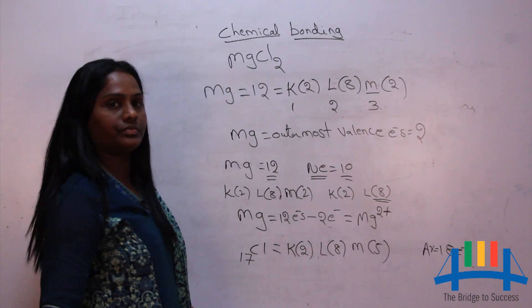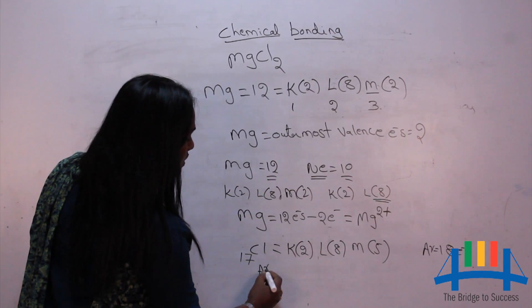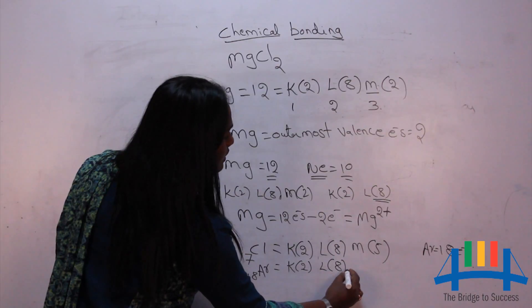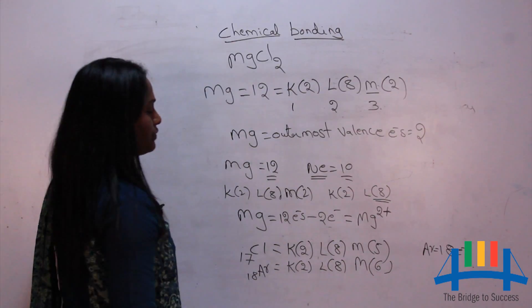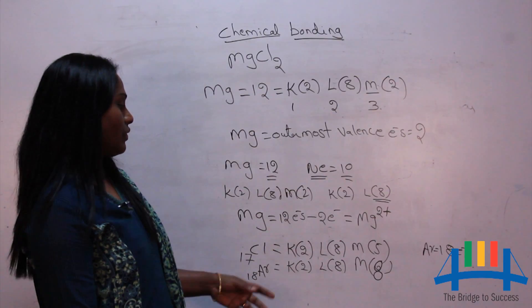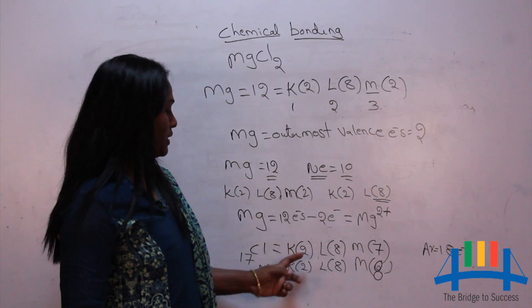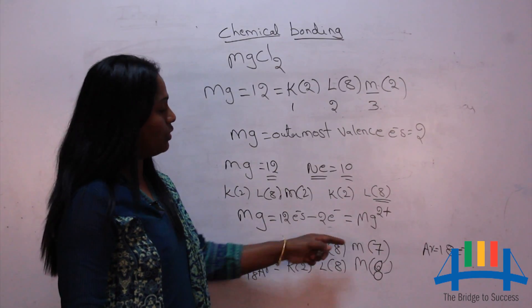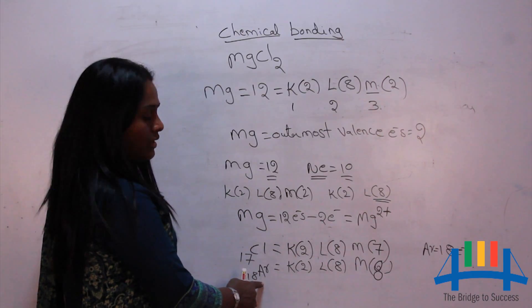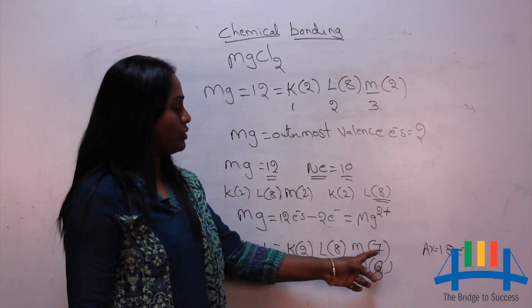Argon's configuration (atomic number 18) is K2, L8, M8. Chlorine has M7, so to get like argon it needs one more electron. Getting one more electron is easier than losing seven electrons. So chlorine must gain one electron.